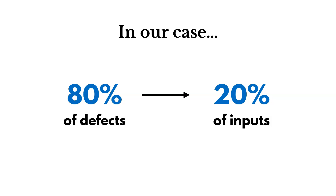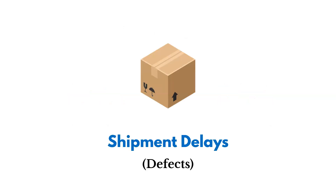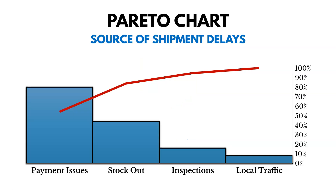Here's an example. Let's say that we're seeing shipment delays in a shipment process — that's a defect — and we're trying to understand what's causing that, what's contributing to it. So we track data about shipment delays and what's causing them, and this is what we see.